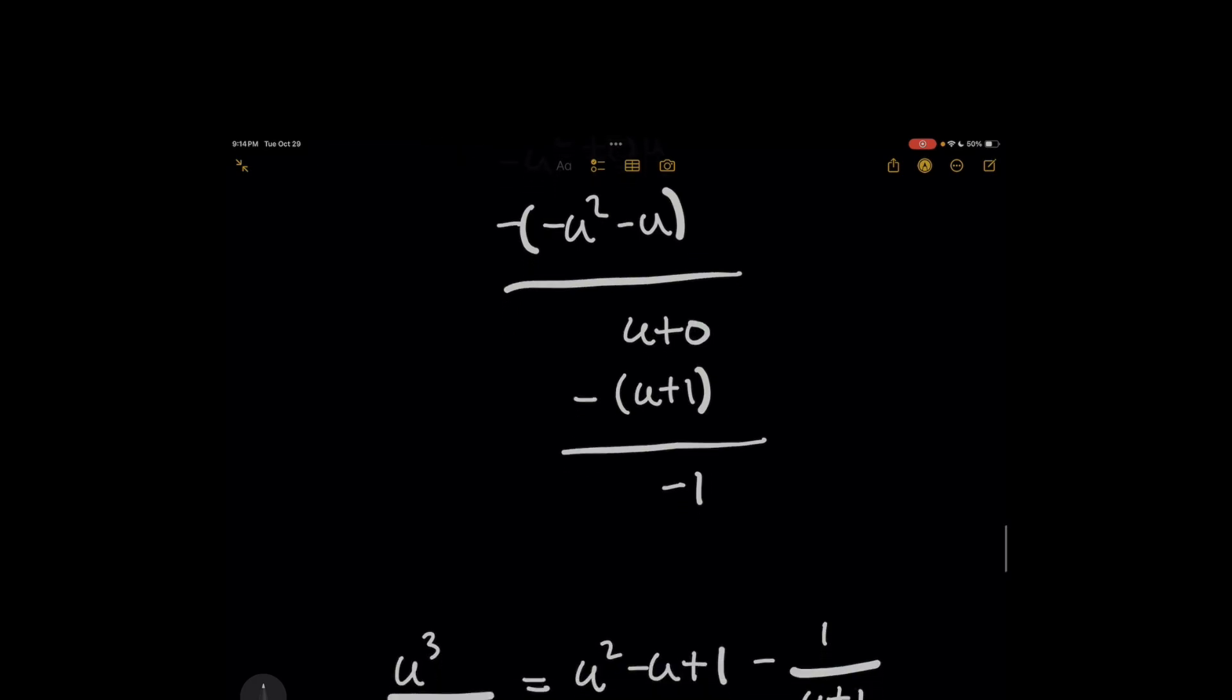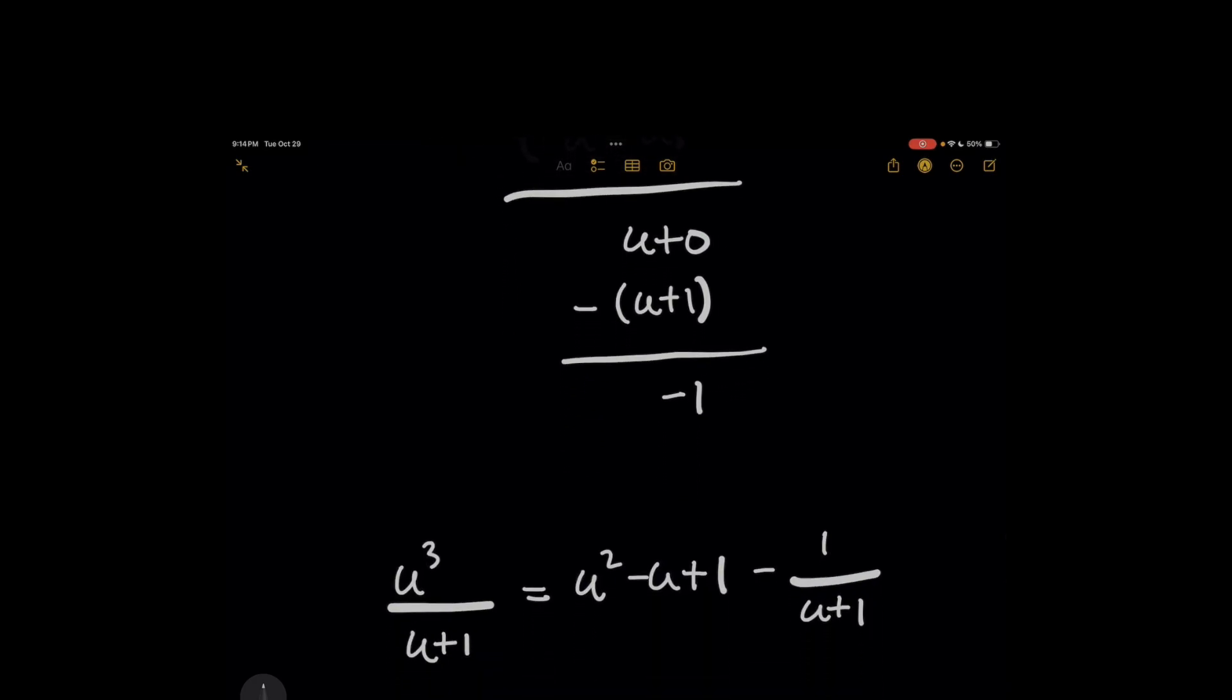And that coefficient is essentially going to be divided by the original divisor. So what this means then is u cubed over u plus 1. You take every term from the quotient above, as is the u squared minus u plus 1. And then for this final remainder here, this minus 1, it's going to be divided by the divisor.